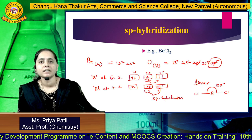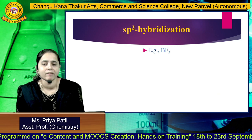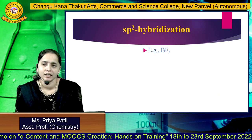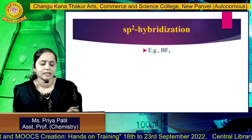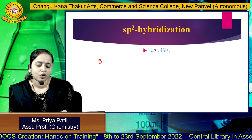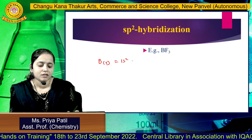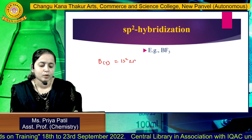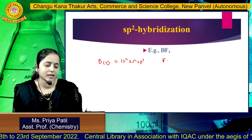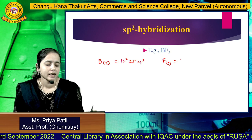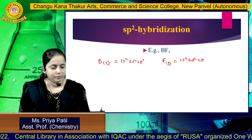Now we will see the next type of hybridization, that is SP2 hybridization, with example BF3. The same logic is applied: the central atom is boron, having atomic number 5, with electronic configuration 1S2, 2S2, and 2P1. Similarly, fluorine has atomic number 9, with electronic configuration 1S2, 2S2, and 2P5.